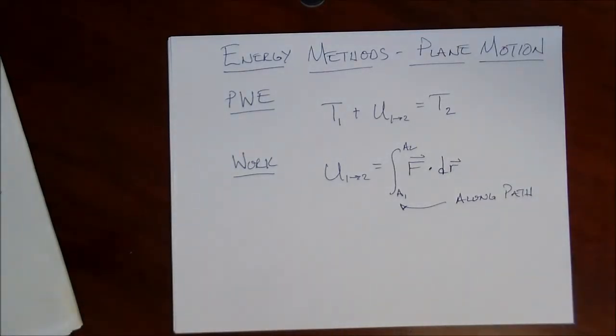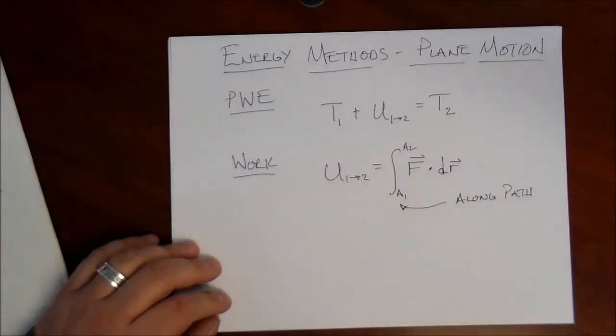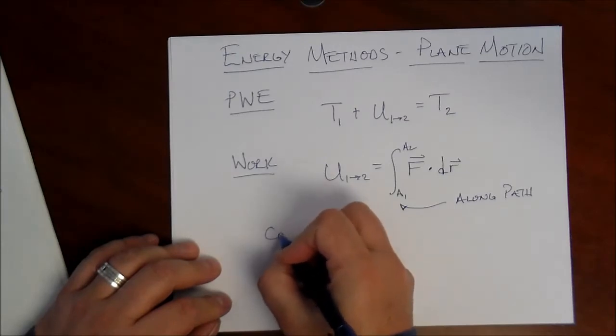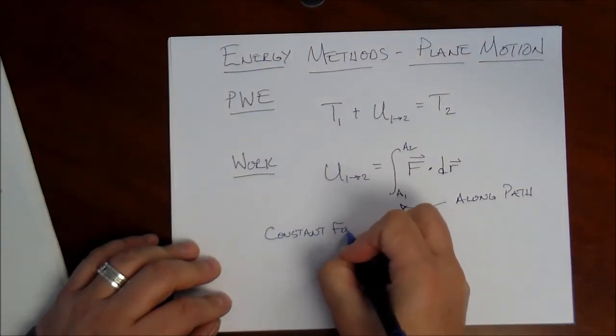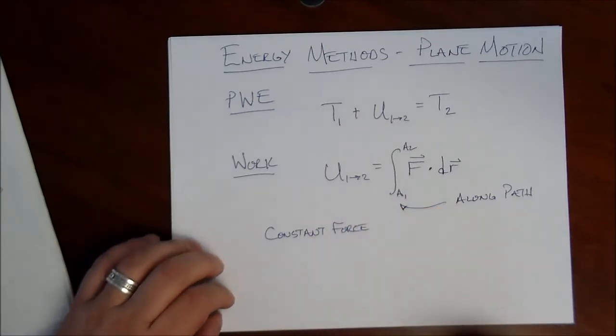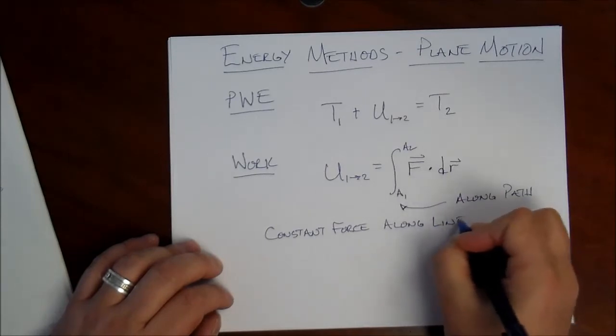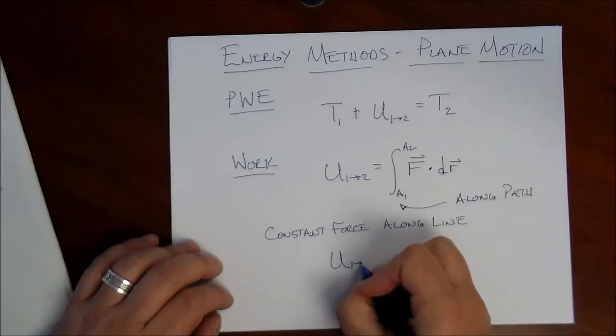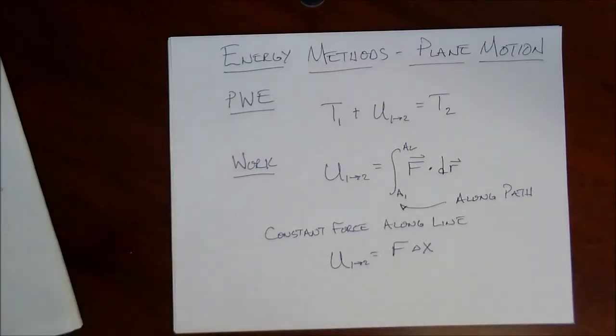Now we're going to restrict ourselves to some simple cases for work for rigid body motion. For example, a constant force along a straight line. In this case, the work is just equal to f times delta x, where delta x is the distance over which the force acts.